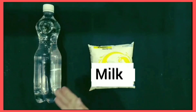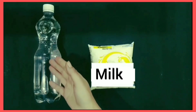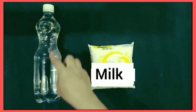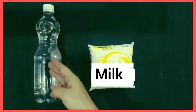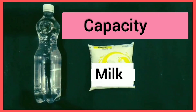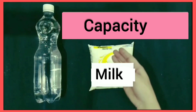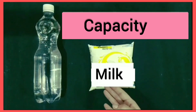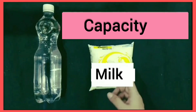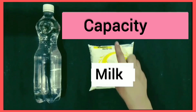Students, I have a water bottle and a packet of milk. The quantity of water in the bottle is called the capacity of the bottle, and the quantity of milk in the packet is called the capacity of the packet.